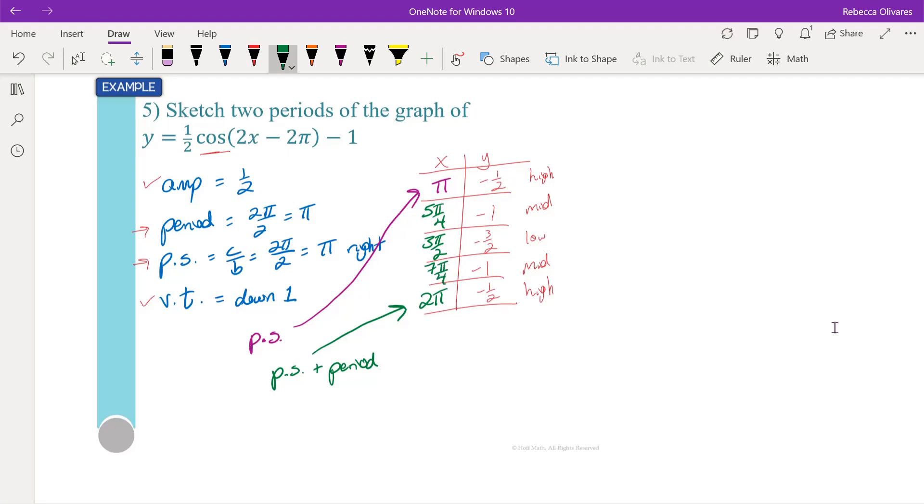The other thing that you can do to find those increments is you just take the period and you divide by 4 because it's going to go every 4. So the period was π divided by 4. You can see that to get from π to 5π/4, we just added π/4 because the period was π.